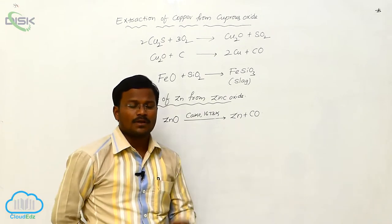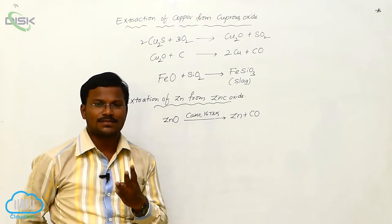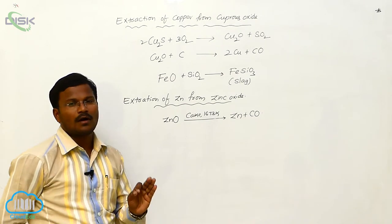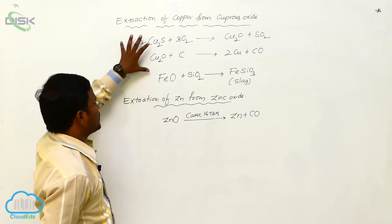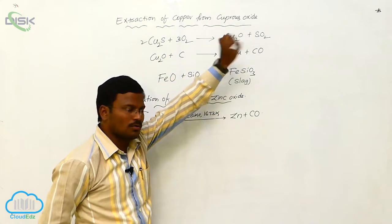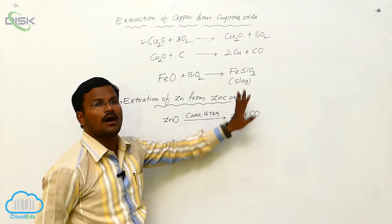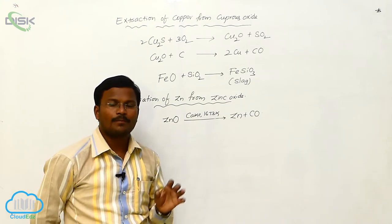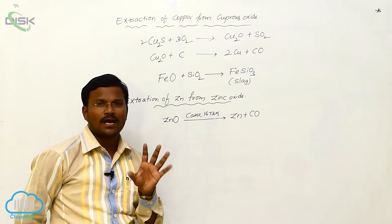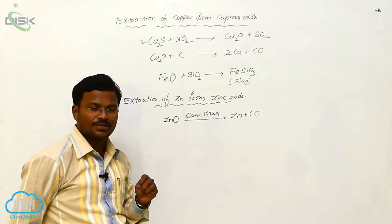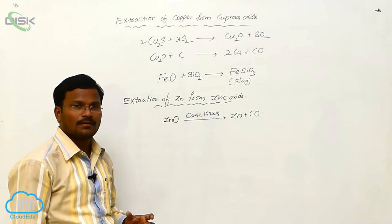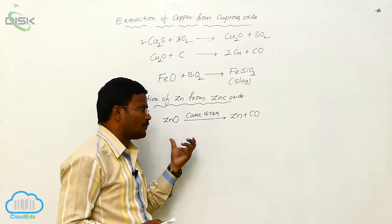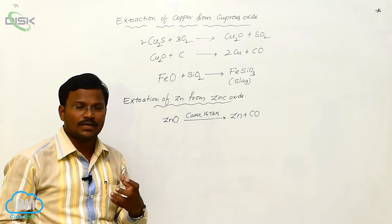To summarize, the three extraction processes studied are: first, extraction of iron from oxide ores of iron; second, extraction of copper from its oxide ore; and third, extraction of zinc from zinc oxide or oxide ores of zinc. All these extractions follow thermodynamic principles — the delta G value has to be negative for their isolations. The Ellingham diagram is used to identify which conditions and which optimum temperature are suitable for these isolations.